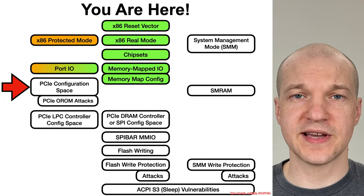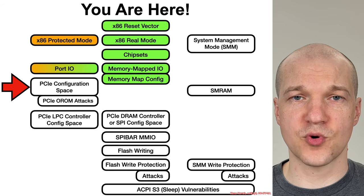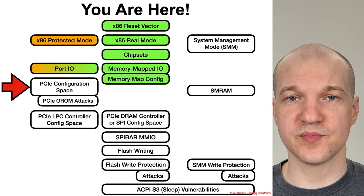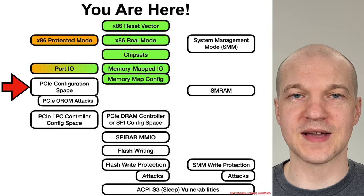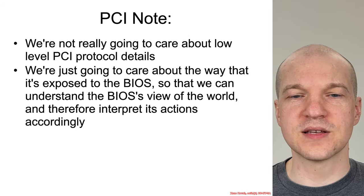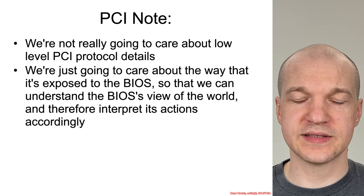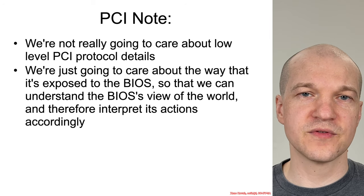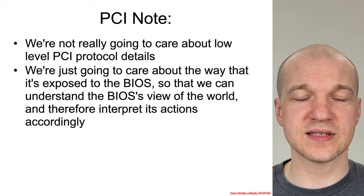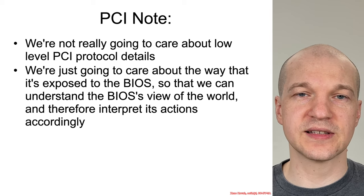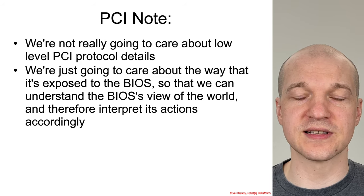Now it's time to move on to learning about PCIe configuration address space. That's something that's accessed through port IO at the very beginning of system boot, and then later on memory-mapped IO once port IO is used to set up the memory-mapped IO. We're not going to get into the super low-level hardware details because they're not relevant for us. All of the PCIe access we care about is done through the configuration address space, which is basically an abstraction — and therefore we're only going to care about the abstraction that the BIOS actually sees in this class.